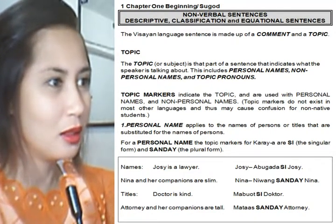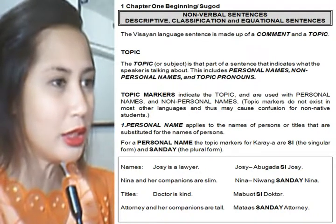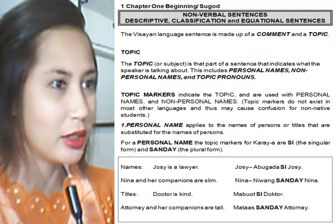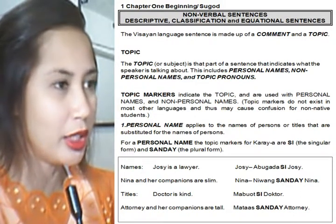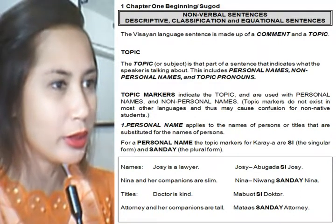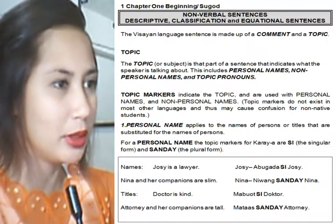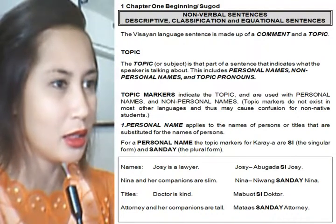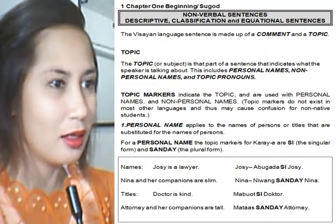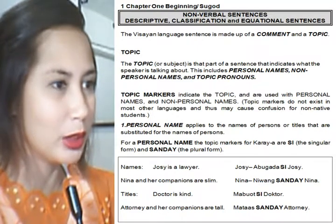The topic or subject is that part of a sentence that indicates what the speaker is talking about. This includes personal names, non-personal names, and topic pronouns. Topic markers indicate the topic and are used with personal names and non-personal names.